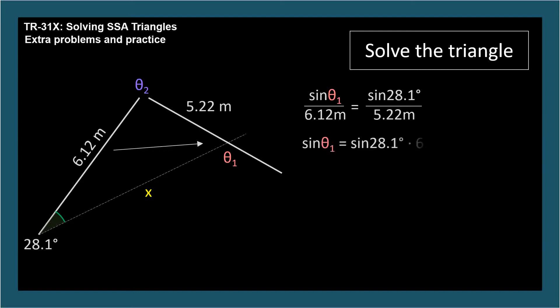So in one calculator step, sine theta 1 equals sine 28.1 degrees times 6.12 meters divided by 5.22 meters. So sine theta 1 equals 0.55222. Easy.